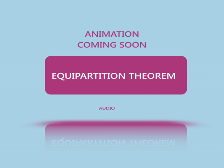Equipartition Theorem. In classical statistical mechanics, the equipartition theorem is a general formula that relates the temperature of a system with its average energies. It is also known as the law of equipartition, equipartition of energy, or simply equipartition. The original idea of equipartition was that, in thermal equilibrium, energy is shared equally among all of its various forms. For example, the average kinetic energy per degree of freedom in the translational motion of a molecule should equal that of its rotational motions.